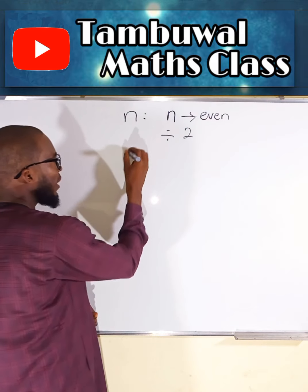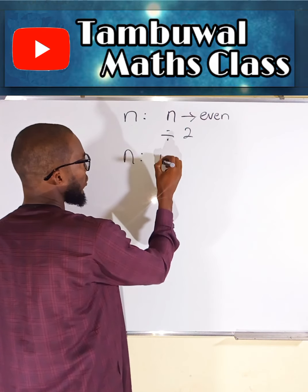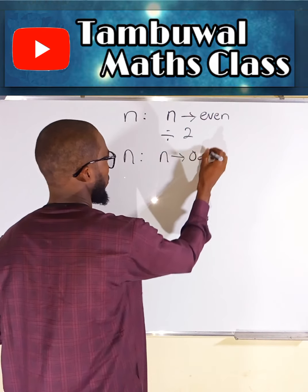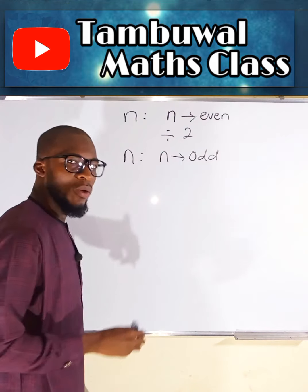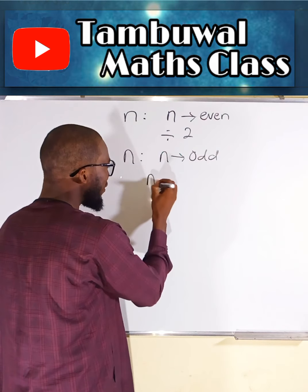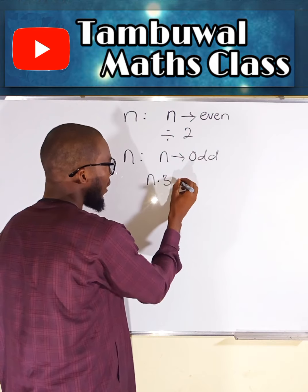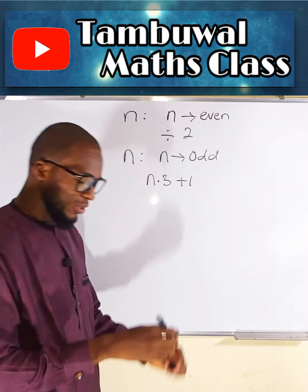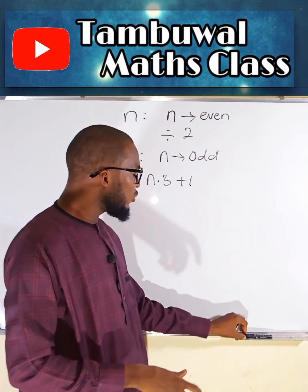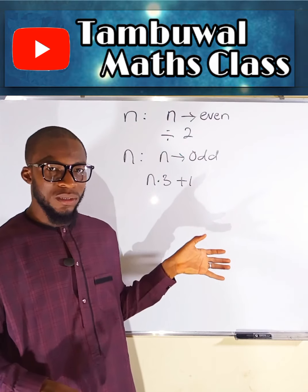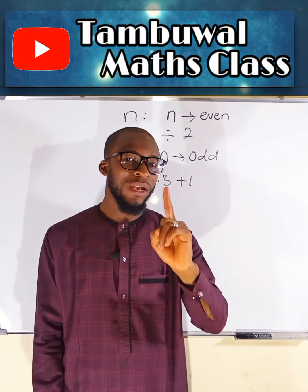But if this number N chosen is odd, we would multiply the number by 3 and add 1 to the result. This is how we are going to continue manipulating this number. But our main target is to arrive at 1.